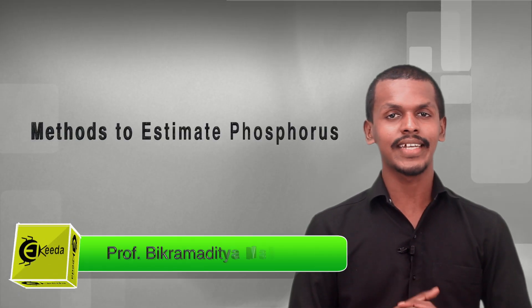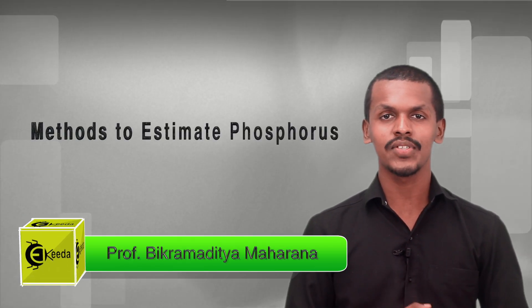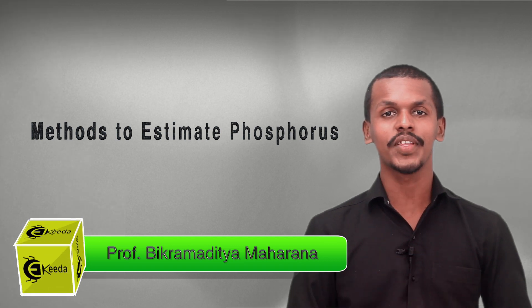In this chapter on basic principles and techniques in organic chemistry, we are doing the topic of estimation of phosphorus in an organic compound. Now we are going to discuss how we can detect the percentage of phosphorus present in an organic compound. In the previous lecture, we discussed how to detect the presence of phosphorus, and now we will detect the percentage.